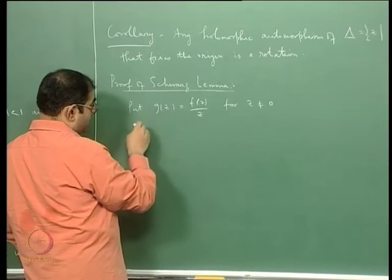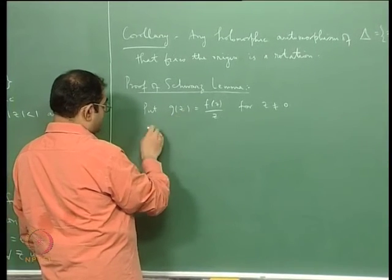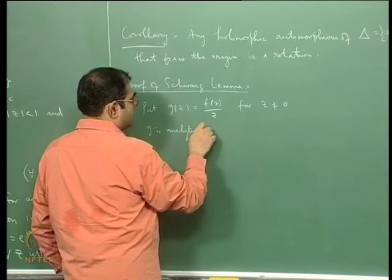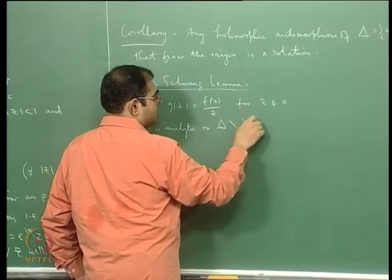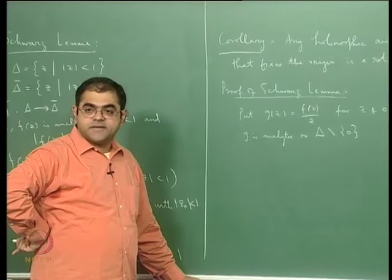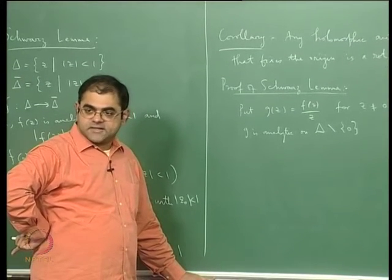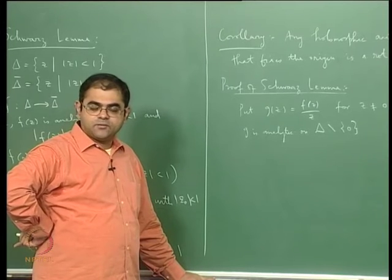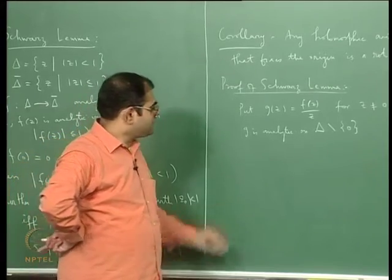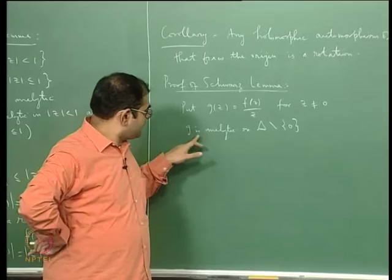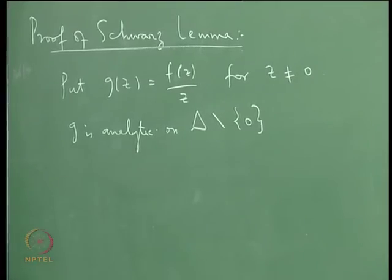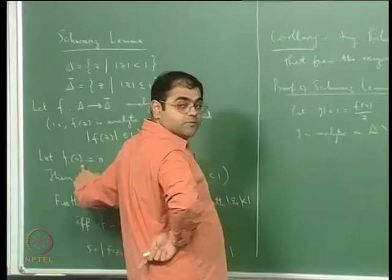g is analytic on the punctured unit disc: if z is not 0, then f(z)/z is analytic because the numerator f(z) is analytic, the denominator z is analytic, and the quotient of analytic functions is analytic wherever the denominator does not vanish. But in fact g is even analytic at the origin, because f(0) = 0.